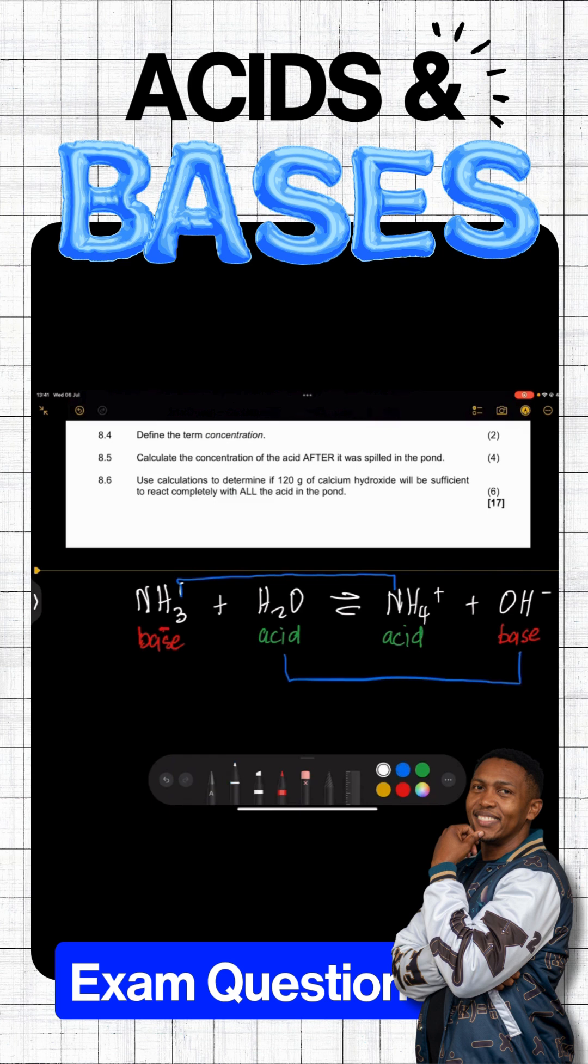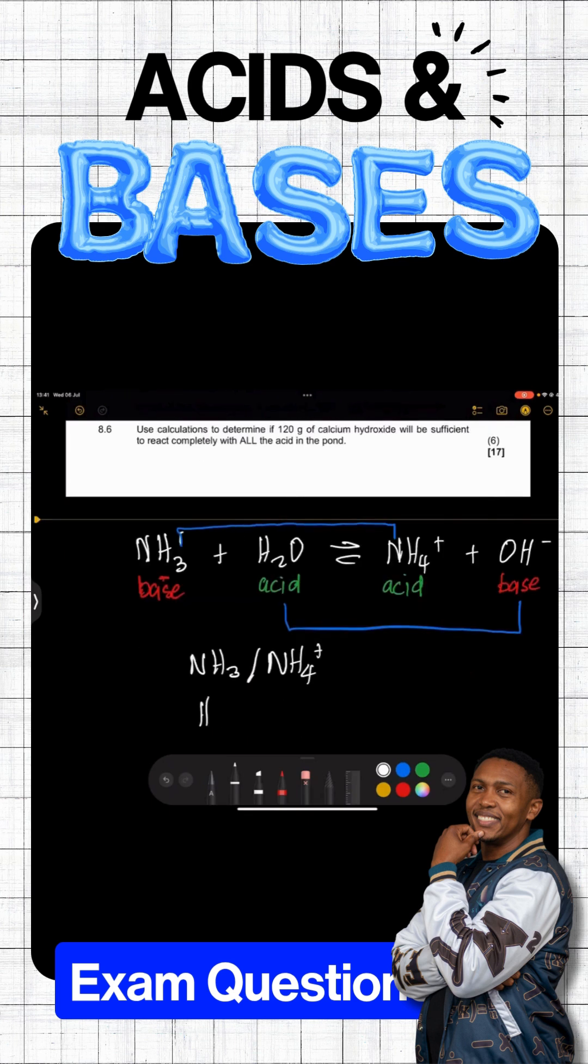And what you would have is NH3 pairs with NH4 plus. But you also have H2O pairing with OH minus. So, please keep in mind, what I'm just trying to show you there is that you can always be able to determine what's the acid-base conjugate pairs.